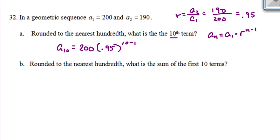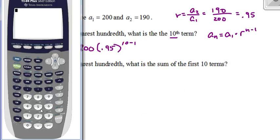To figure this out, I need my calculator. So 200 times 0.95 raised to the... Now I can do 10 minus 1 in my head, which is just 9. There we go, and I press enter, and there's my answer. And it asks to the 100th place, so that's going to be two decimal places. 126.05.